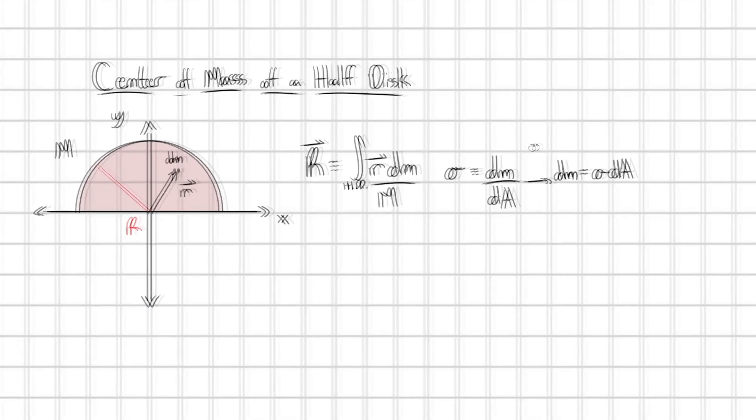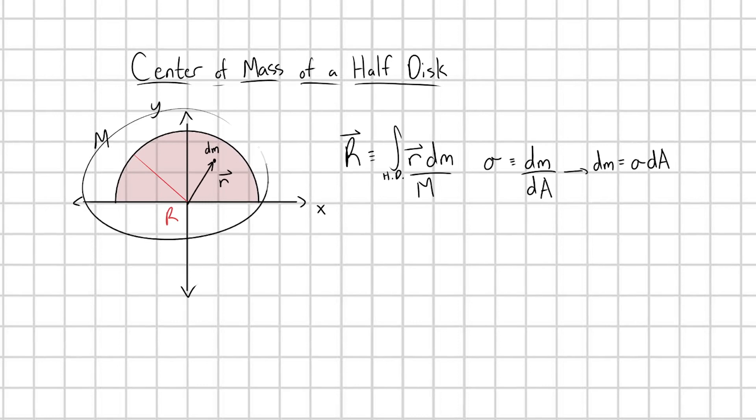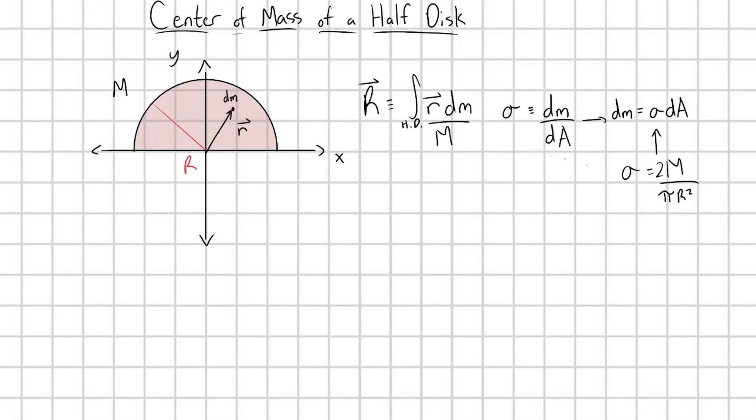Now, because we have a uniform disk, we can also rewrite this sigma. What would the mass density be? It would just be the total mass M divided by the area of this half disk, which would be pi R squared divided by 2. I'm just going to move this divided by 2 over to the top of the fraction now.